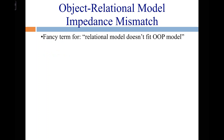This comes down to the relational model versus the object model — where object means an object in a programming language. There's a long-winded term: object-relational model impedance mismatch. You have the object model and the relational model, and there's a kind of mismatch. Impedance mismatch comes from electrical engineering. Basically, this means the relational model does not fit the OOP model.